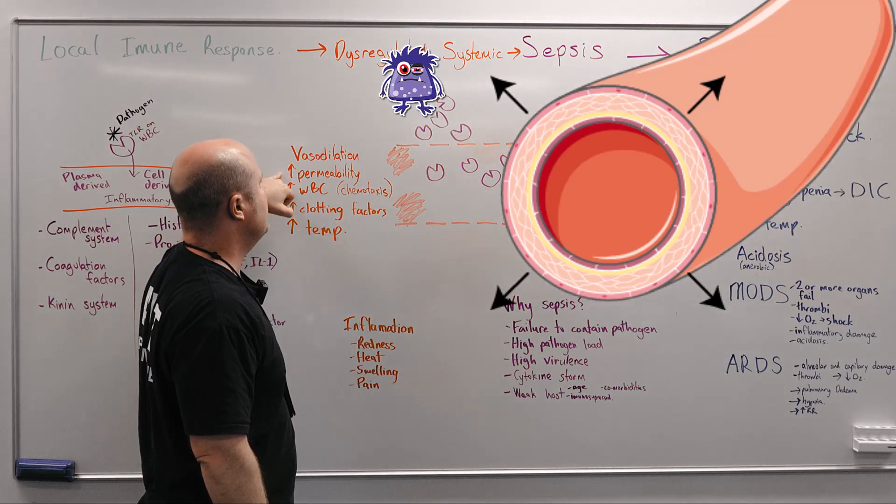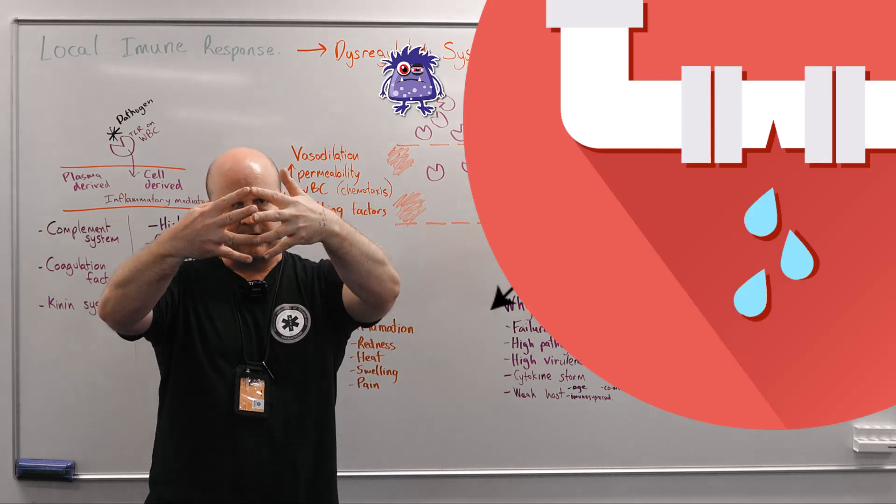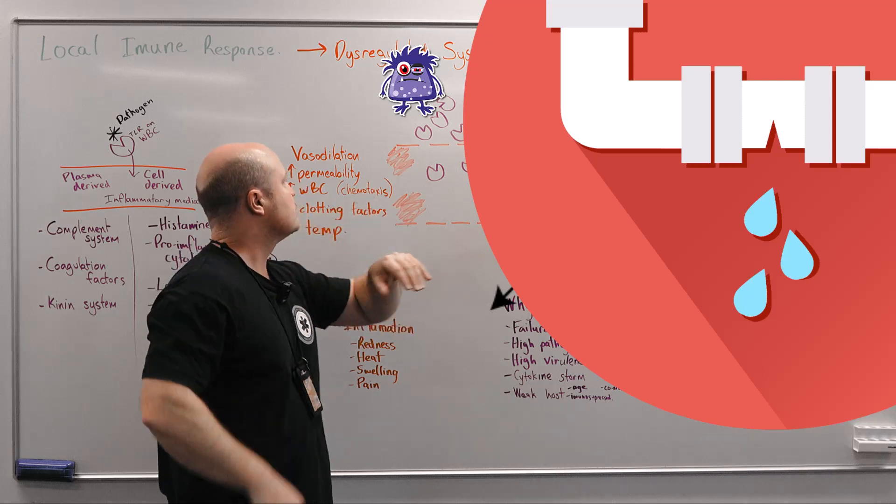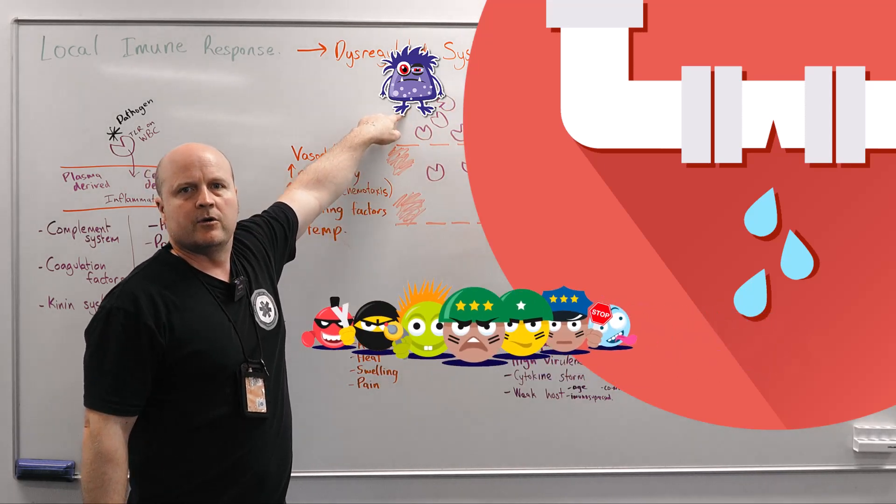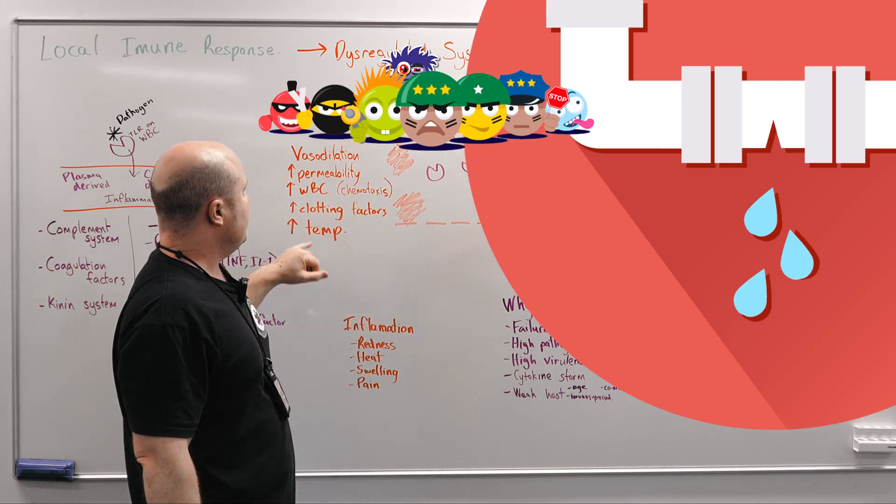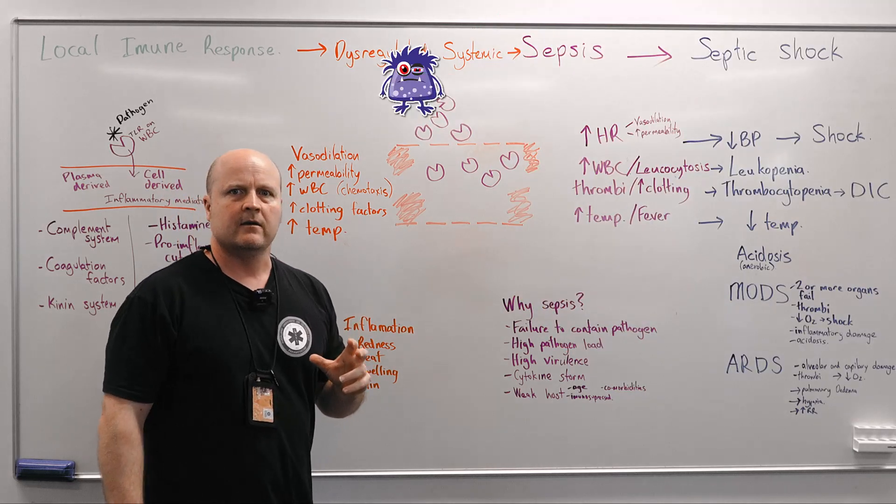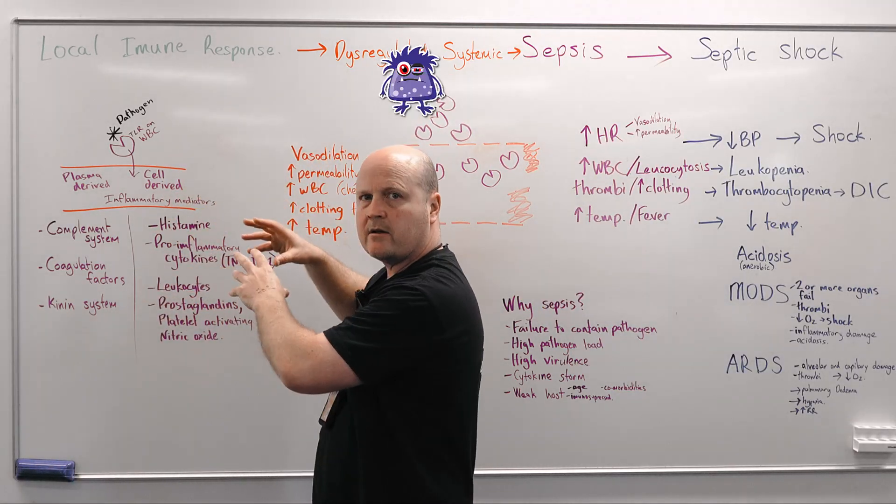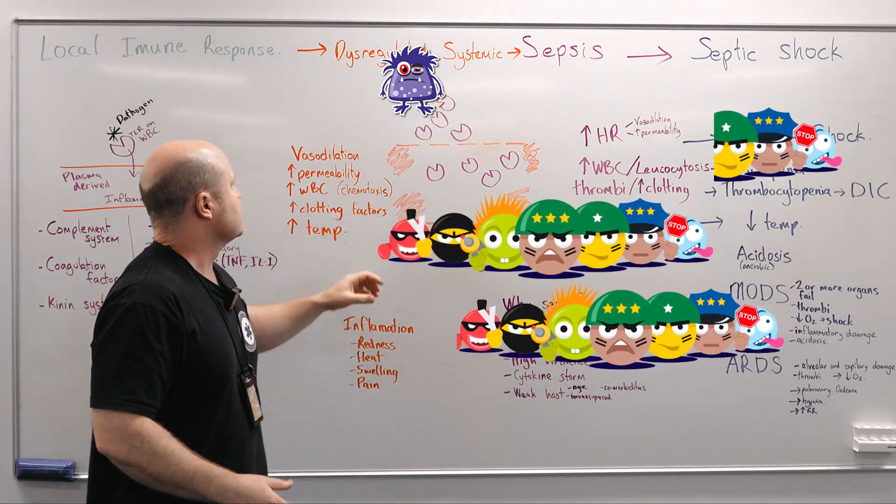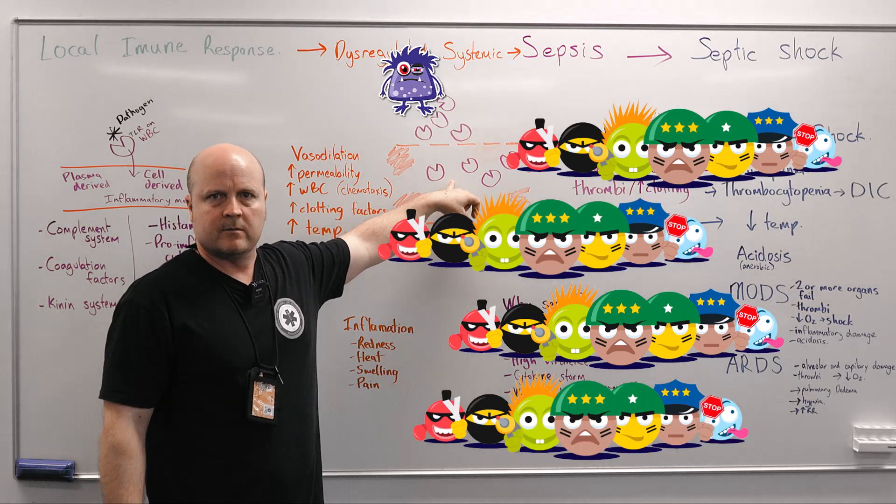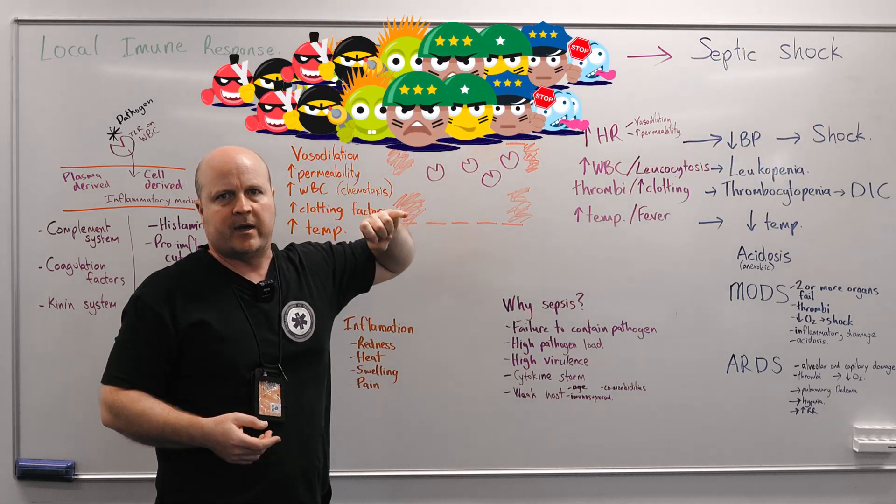Then we get increased permeability so now we've got more blood to the area we make those blood vessels more leaky so with more holes those white blood cells that we have can leave the blood vessel and go to where the pathogen is. Next up we have chemotaxis so this is where our inflammatory mediators go around and they call more white blood cells to the area. This is good because if we get more of them to the area then we've got more goodies to fight the baddie.